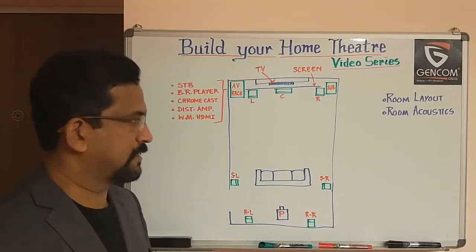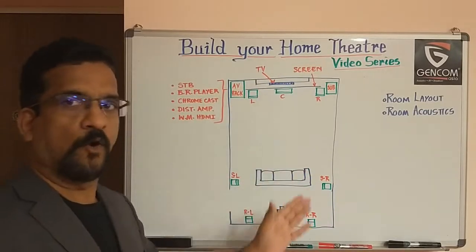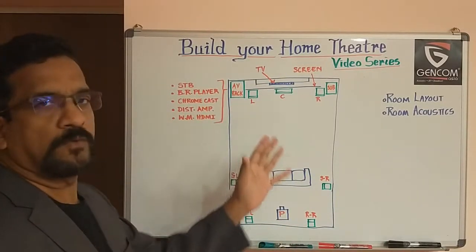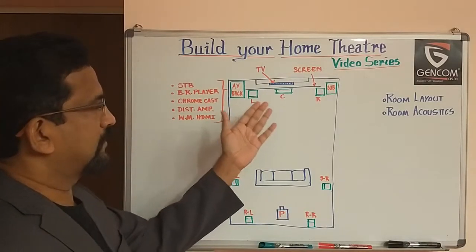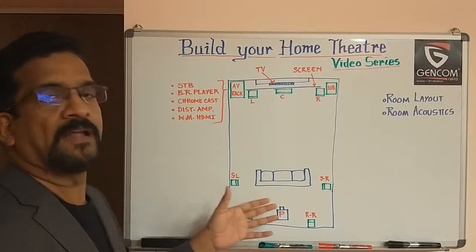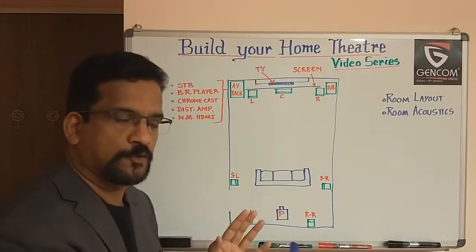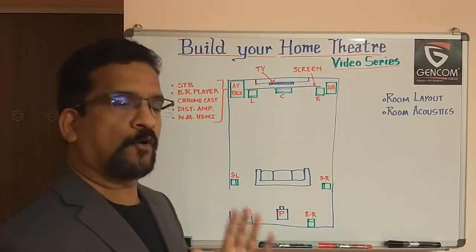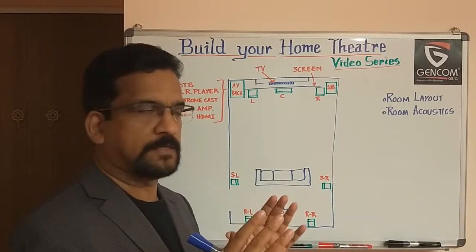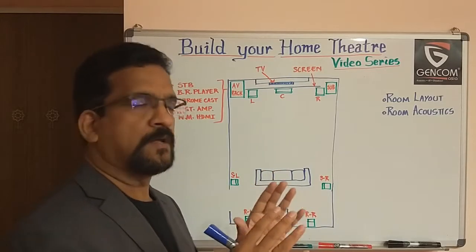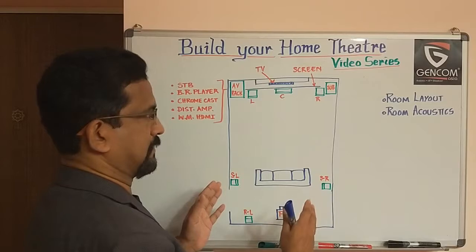For the room layout, typically if it's a dedicated home theatre, this is how the layout is going to be, and the positions of the respective equipment should be at the right places. In case you don't have a dedicated room and it is a living room, then according to the shape of the room and where you want to position the speakers, amplifiers and the rest, you can make the layout accordingly. But the general guideline is this.